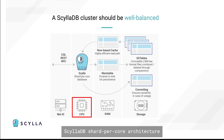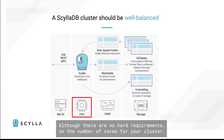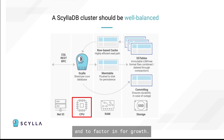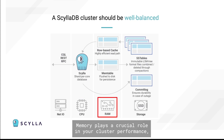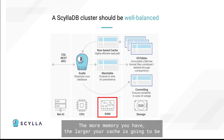ScyllaDB's Shard Per-Core architecture allows for linear scalability of your nodes. Although there are no hard requirements on the number of cores for your cluster, remember to consider the expected number of operations per second for your application, and to factor in for growth. Memory plays a crucial role in your cluster performance. ScyllaDB implements its own cache subsystem to cache both your writes and reads. The more memory you have, the larger your cache is going to be, and the fewer round trips to disk will guarantee lower latencies.